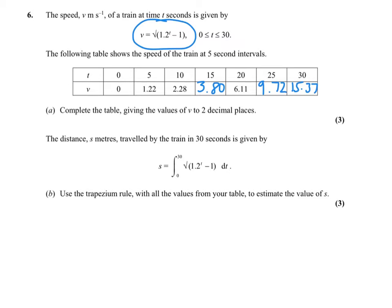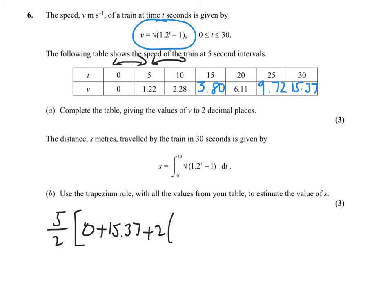Now once I've got those values, I can use them in the trapezium rule formula, which is out of the formula book. The height of the trapeziums is 0 to 5, 5 to 10 — so it's 5 over 2 in brackets. It's the first plus the last plus 2 times all the bits in between: 1.22 plus 2.28 plus 3.80 plus 6.11 plus 9.72. Work it out carefully — it's not too bad.